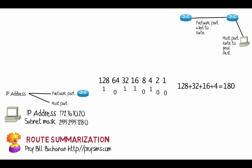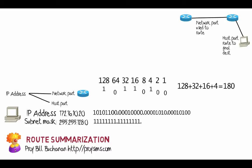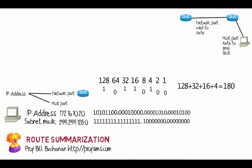For example, 10110100 is 128 plus 32 plus 16 plus 4, which gives us 180. We have bytes that we convert into integers. Converting our IP address 172.16.10.20: 172 is 10101110, 16 is 00010000, and so on. We then draw out our subnet mask — with a subnet mask, a 1 identifies the network part and a 0 identifies the host part. In this case we have 17 ones followed by 15 zeros.